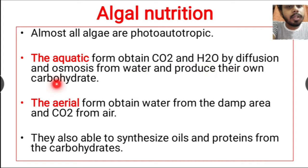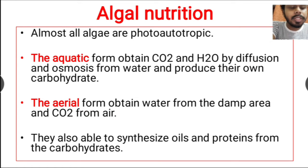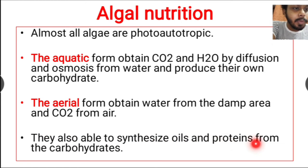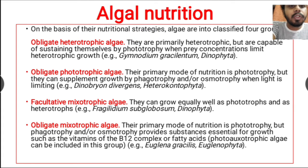The aerial form of algae — those present in soil or in air — obtain water from damp areas and CO2 from air, and produce their own carbohydrates or food. They are also able to synthesize oils and proteins from those carbohydrates.